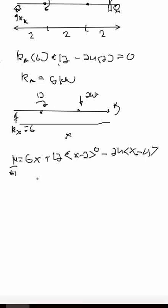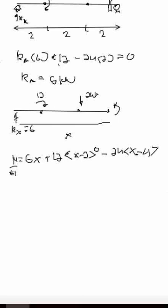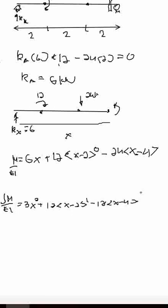Integrating M over EI once to get the slope equation: EI·Y' equals 3X squared plus 12(X minus 2) raised to the first power, minus 12(X minus 4) squared, plus the constant C1. This is our first integration, which gives us the slope at any point along the beam.